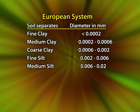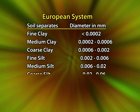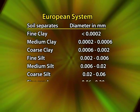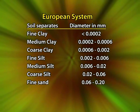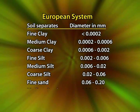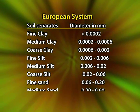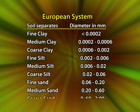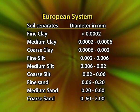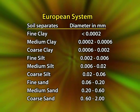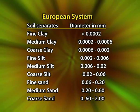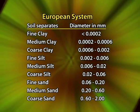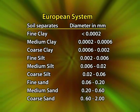Similarly, medium silt has a diameter of 0.006 to 0.02 mm, coarse silt ranges between 0.02 to 0.06 mm, fine sand between 0.06 to 0.20 mm, medium sand 0.002 to 0.006 mm diameter, and coarse sand having a diameter ranging between 0.006 to 2 mm.